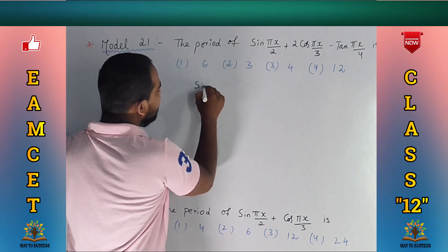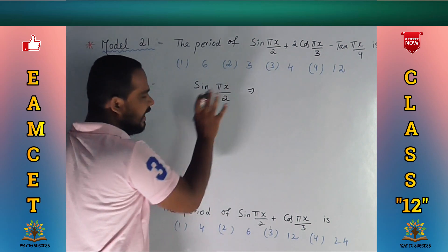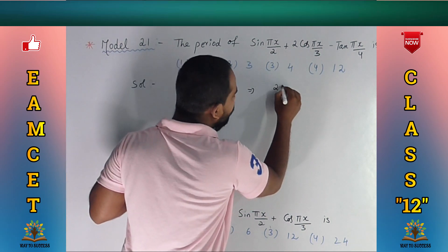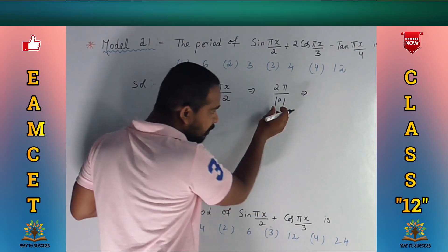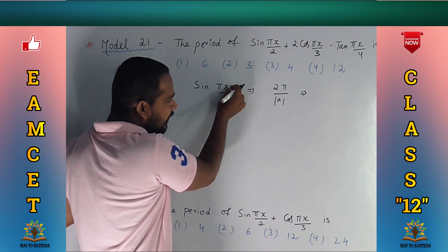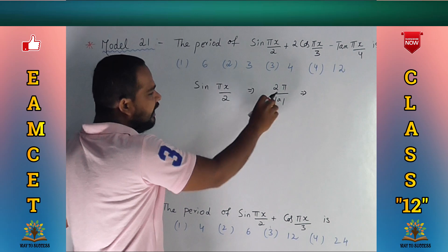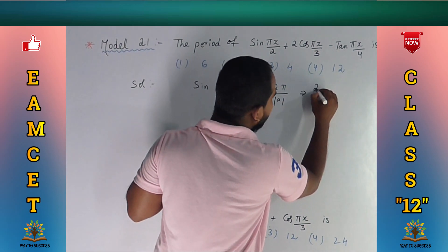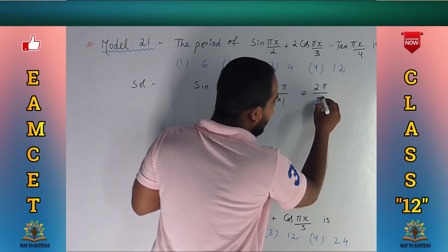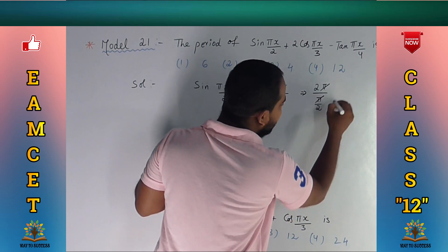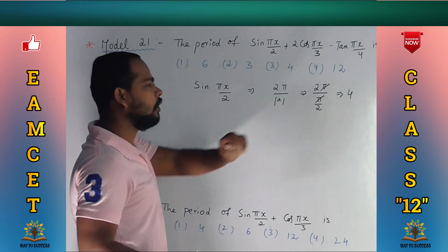First, let's take sin(πx/2). The formula for period of sin is 2π divided by the modulus of a, where a is the x-coefficient constant. Here a = π/2, so the period is 2π divided by (π/2). The π's cancel, and we get 2 times 2, which equals 4. The period of sin(πx/2) is 4.